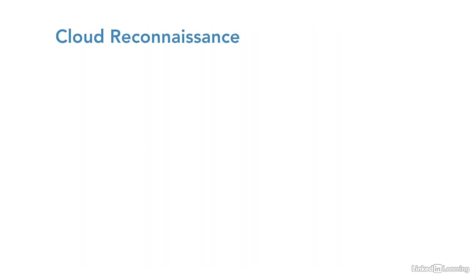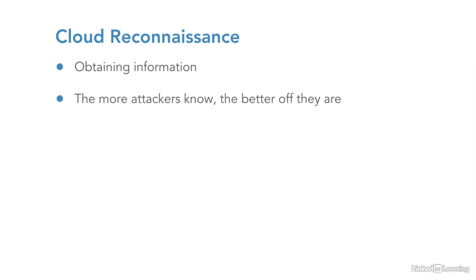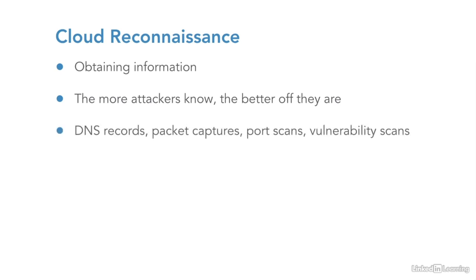Cloud reconnaissance is essentially a fact-finding mission from the malicious user's perspective — it's about obtaining information. The more an attacker knows about a target using cloud computing, the better positioned they are to mount a successful attack. This means finding out the cloud service provider used by an organization, which cloud services are being used, how they're being used, and also using technical techniques to learn DNS names, IP addresses, capturing network traffic with packet capturing tools to examine packet headers and payload contents, conducting port scans to see what services are running, and vulnerability scans to identify weaknesses such as missing patches.